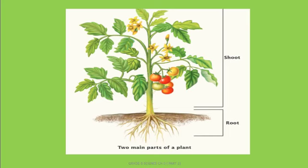In the given picture we can also see different other parts present in the shoot system — we can see leaves, flowers, buds, fruit, the stem, and branches. So the root system consists of only the root, but the shoot system consists of many other parts like leaves, flowers, fruits, buds, stem, and branches.